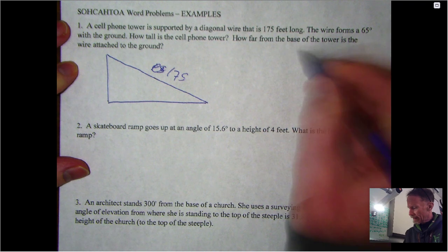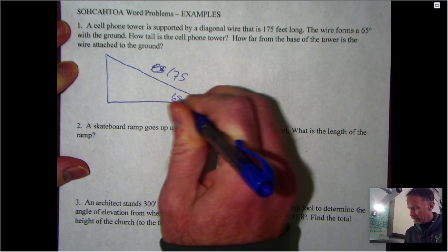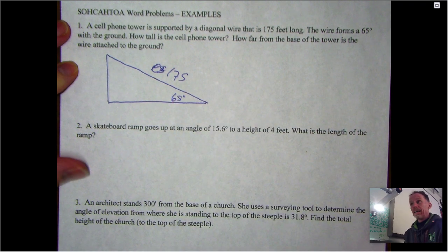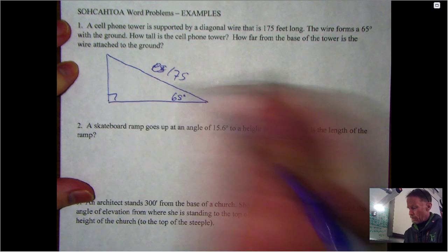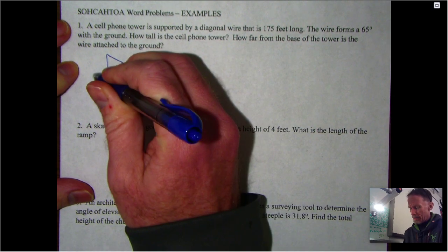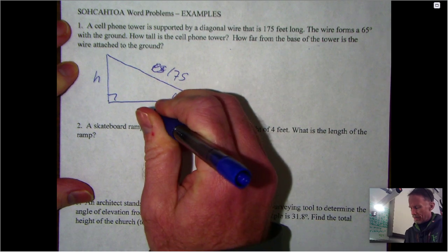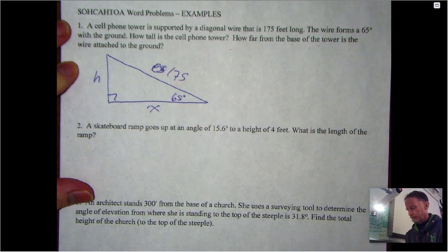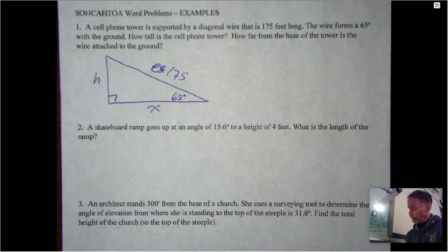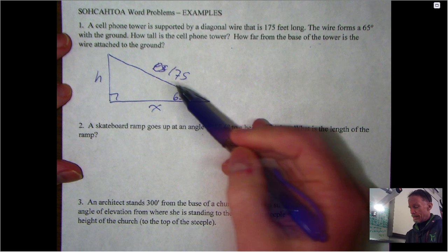We know the wire itself is 175, so I'm going to put 175 right there. I know it forms a 65 degree angle, and that's really it. So we want to find both the height, I'm going to call this h, and we want to know how far the base is, I'm going to call that x.